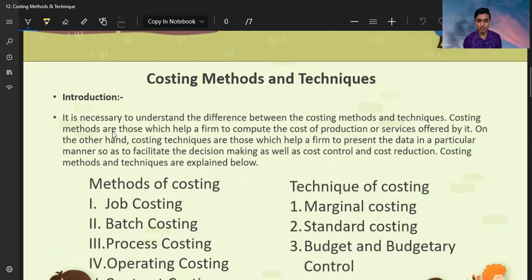Today we will discuss the method of costing. First, it is necessary to understand the difference between costing methods and techniques. Costing methods are those which help a firm to compute the cost of production or service offered by it. Costing methods help our products identify the cost of production. On the other hand, costing techniques are those which help a firm to present data in a particular manner so as to facilitate decision making as well as cost control, cost reduction. Costing methods and techniques are explained below.